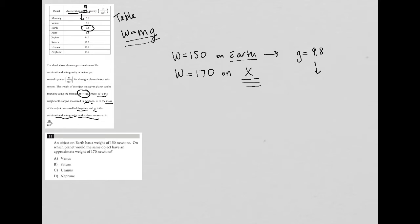So W equals mg, but again, W is 150, M is unknown, and G is 9.8. So I can divide both sides of this equation by 9.8. So I go to my calculator. 9.8 is roughly 10. So I could just estimate and say 150 divided by 10. Let's be more exact. So 150 divided by 9.8 is equal to 15.3, roughly. So M must be 15.3. So that's new information that I was able to gather.